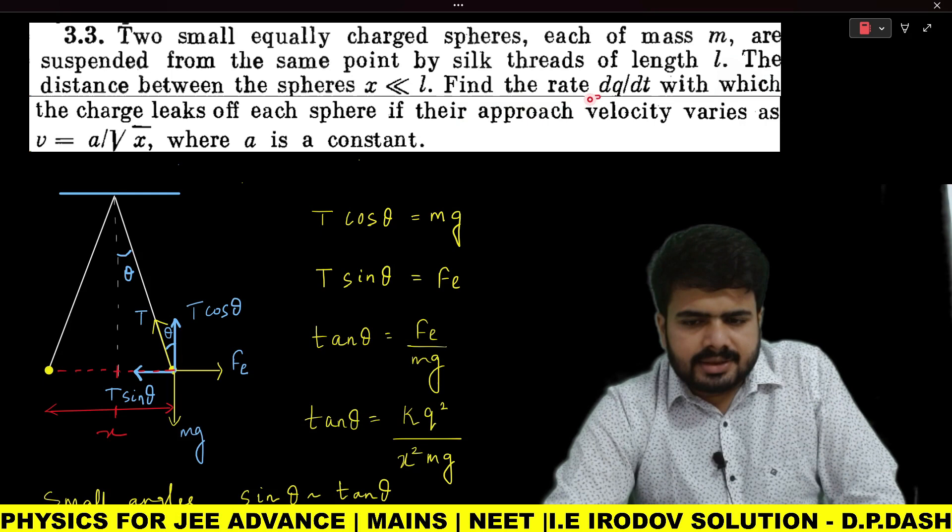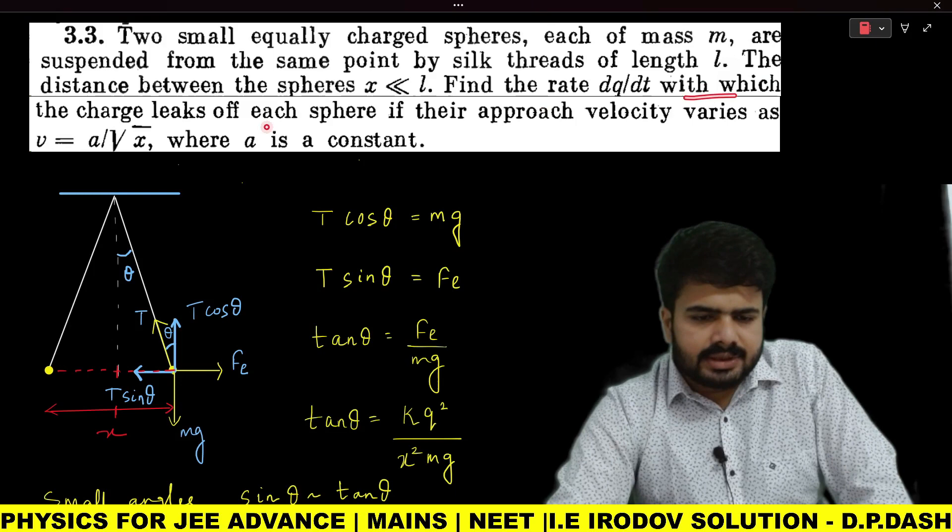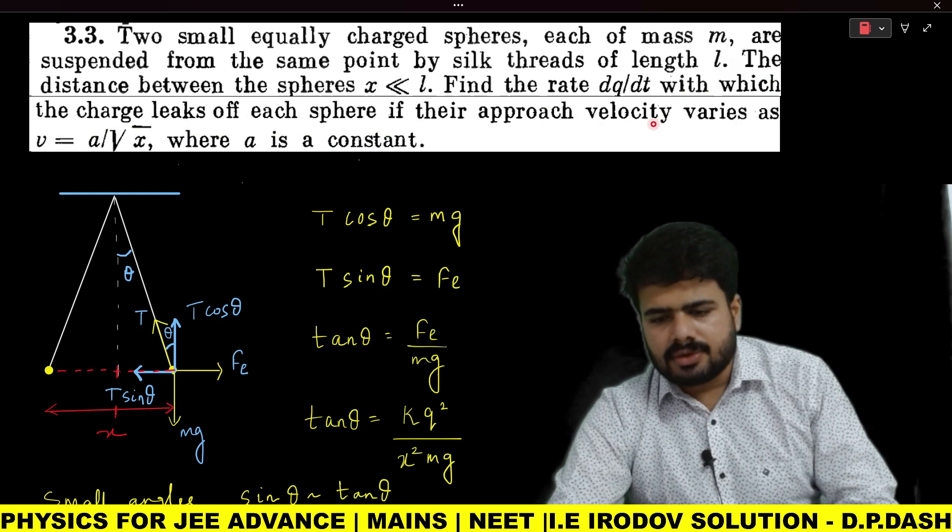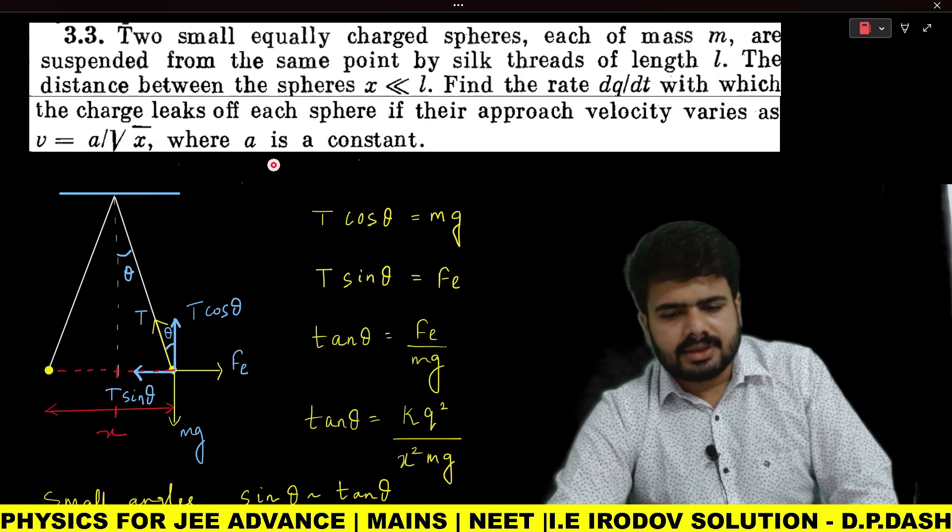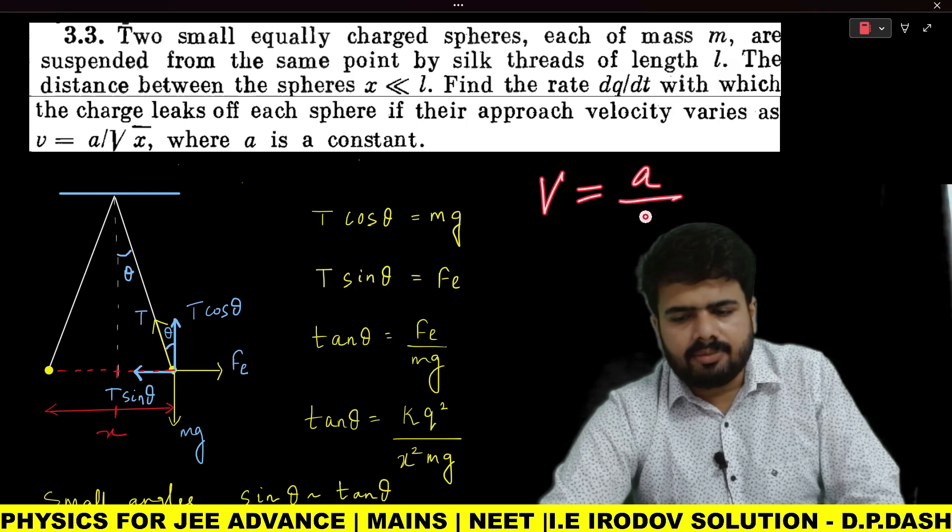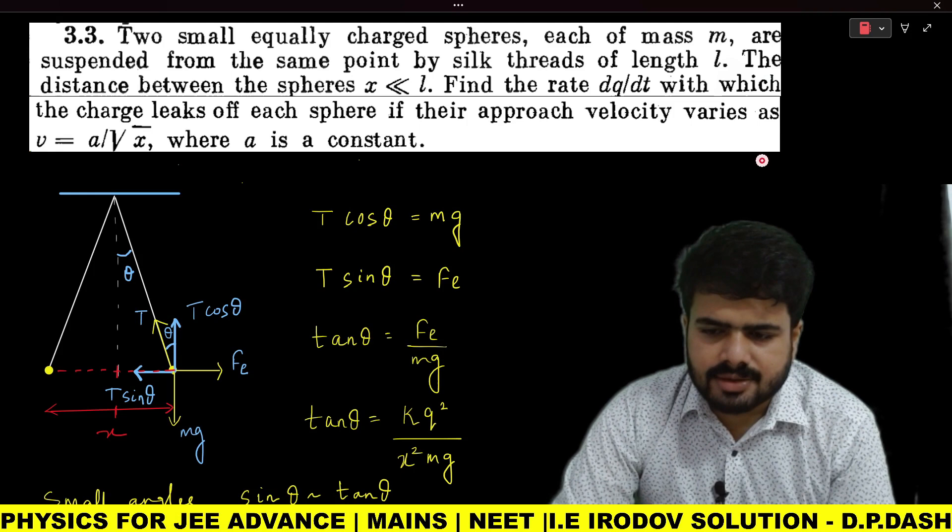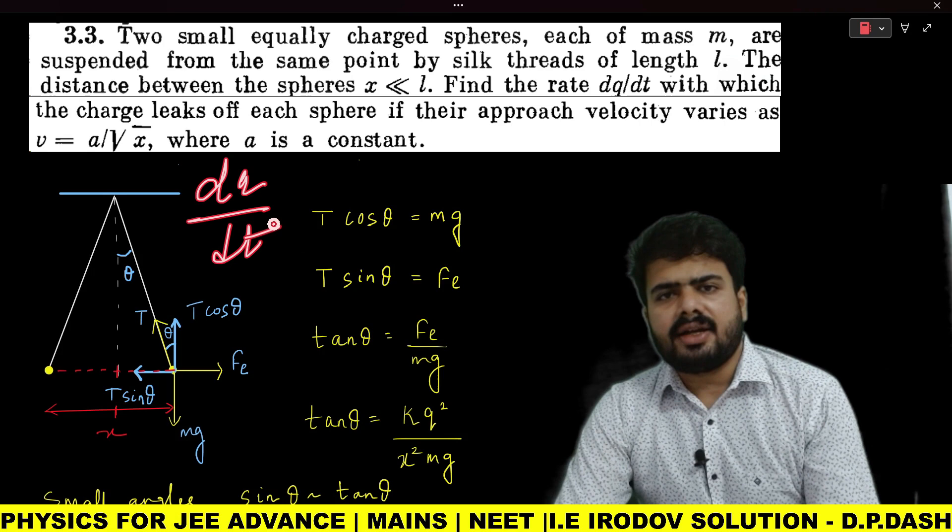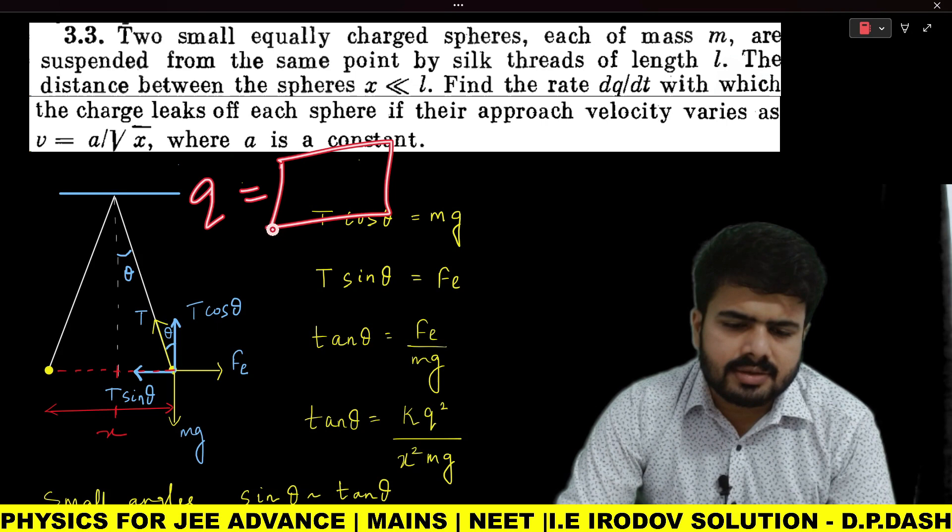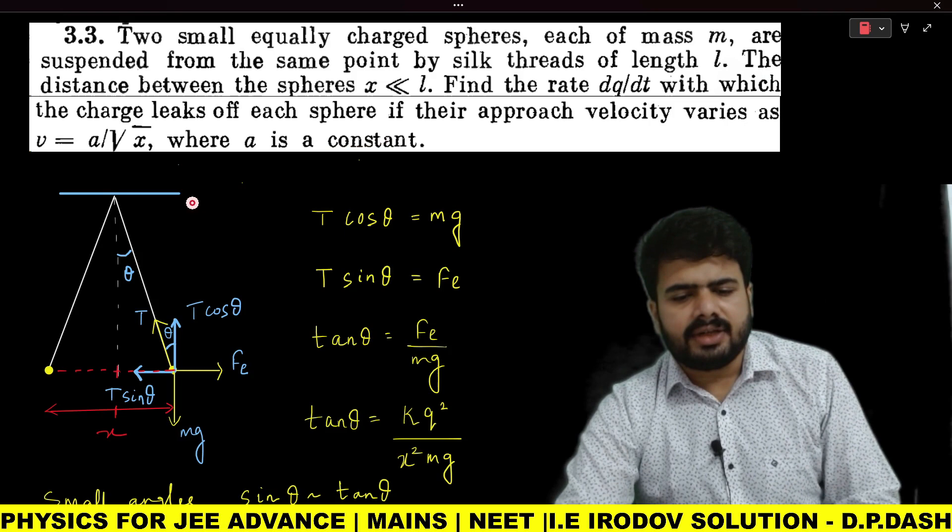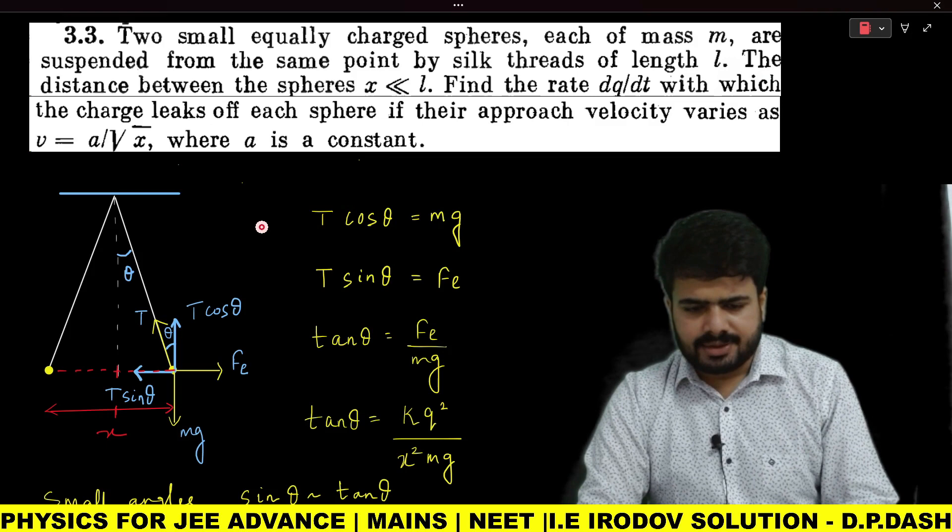Find the rate dq/dt with which the charge leaks from each sphere if their approach velocity varies as v = a/√x, where a is a constant. Our aim is to find dq/dt. This means I need to create an expression where charge is the subject, expressed in terms of some other quantities.